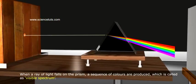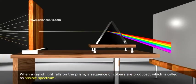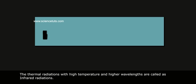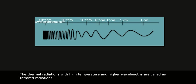When a ray of light falls on the prism, a sequence of colours are produced, which is called as visible spectrum. The thermal radiations with high temperature and higher wavelengths are called as infrared radiations.